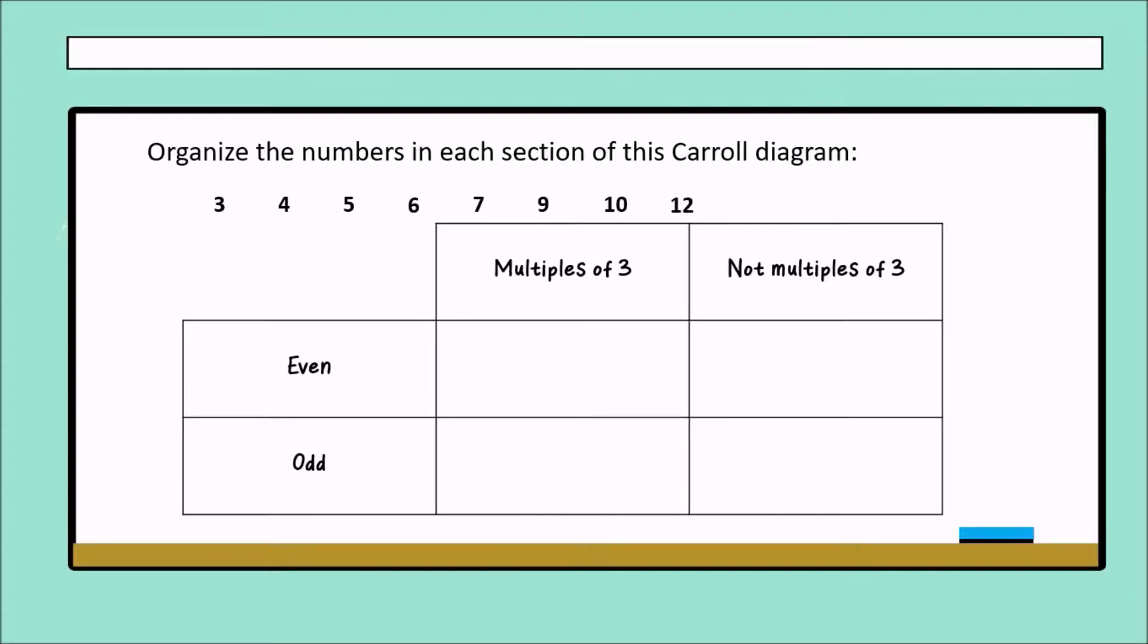Check with three. Three is here. Why here? Because three is a multiple of three and is an odd number. Very good. Four. Four is not a multiple of three and is an even number. Perfect.